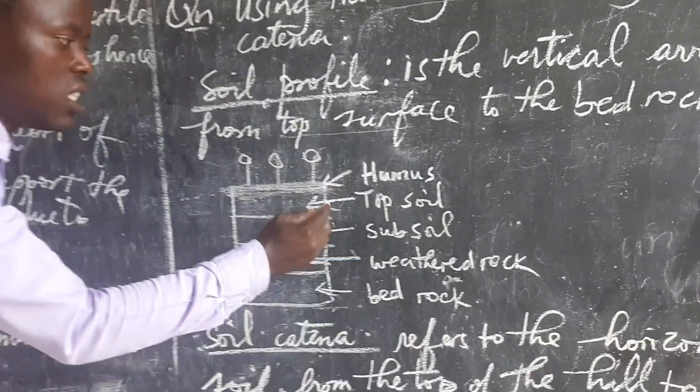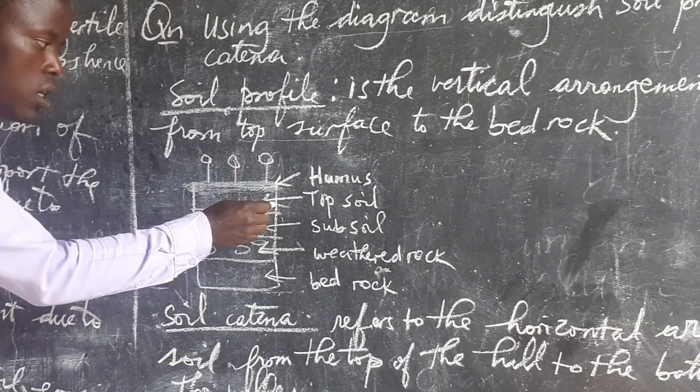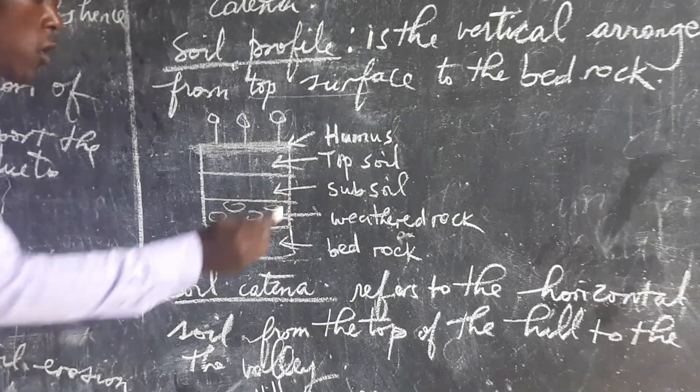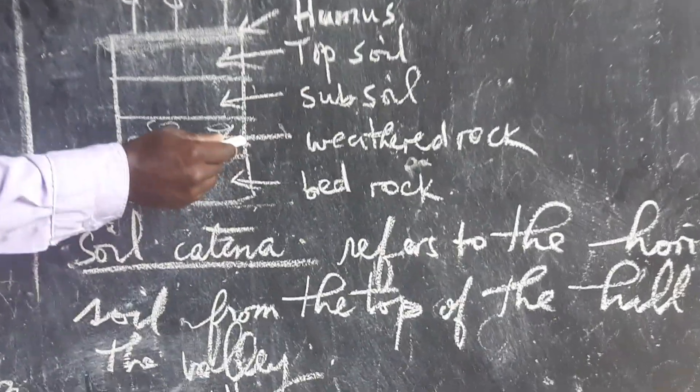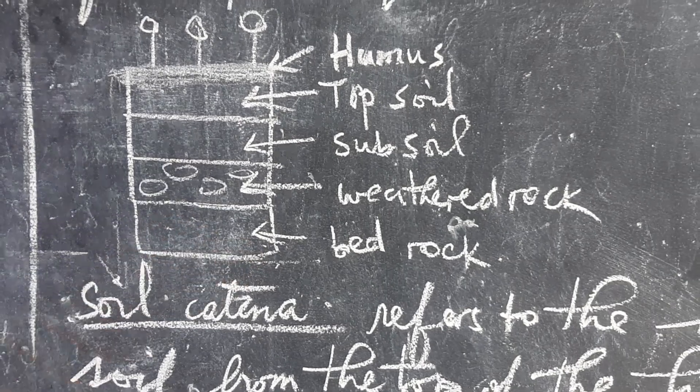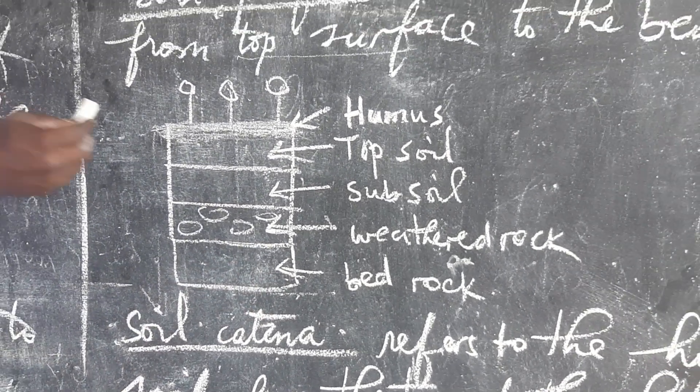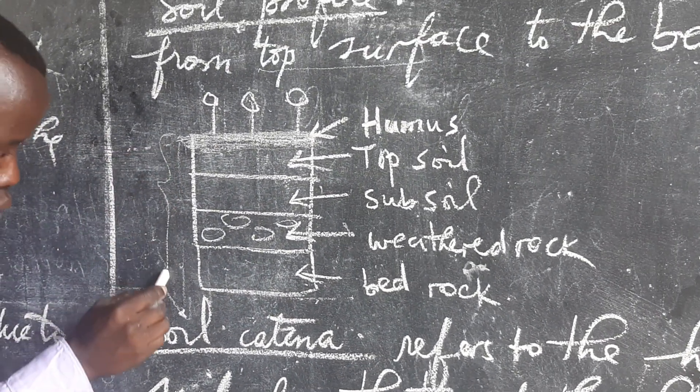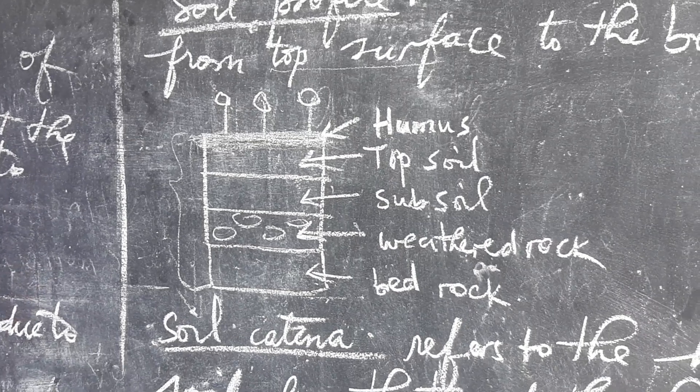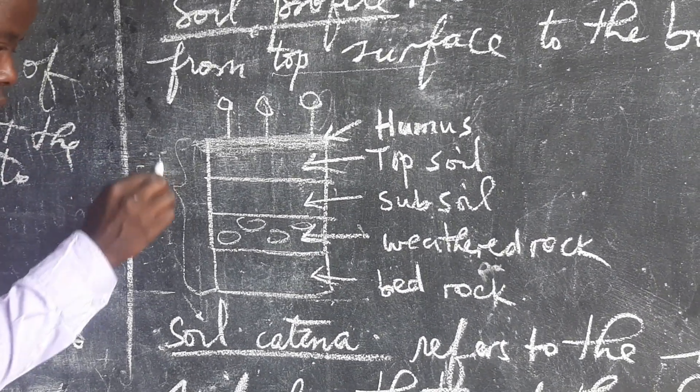And below the humus, there is what you call a top soil. Below top soil, there is sub soil. Below sub soil, there is weathered rock. And below weathered rock, there is bedrock. So meaning that from the top surface to this bedrock, they make what you call a soil profile.